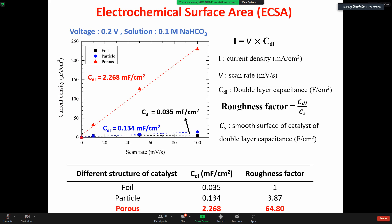Then we can obtain the roughness factor. From the figure, we can see that it makes sense that the copper porous catalyst has the highest roughness factor.